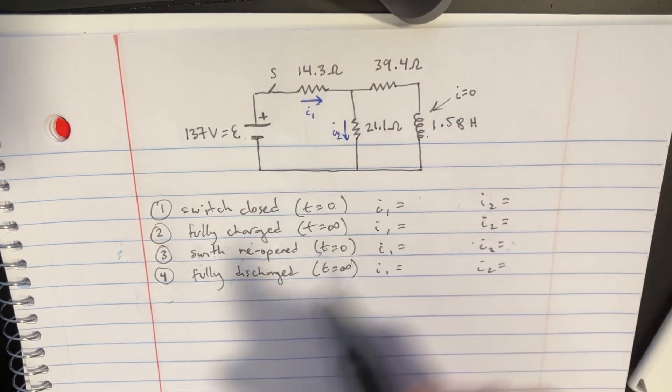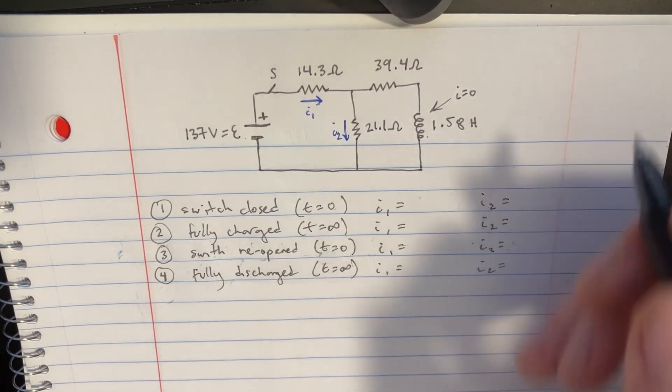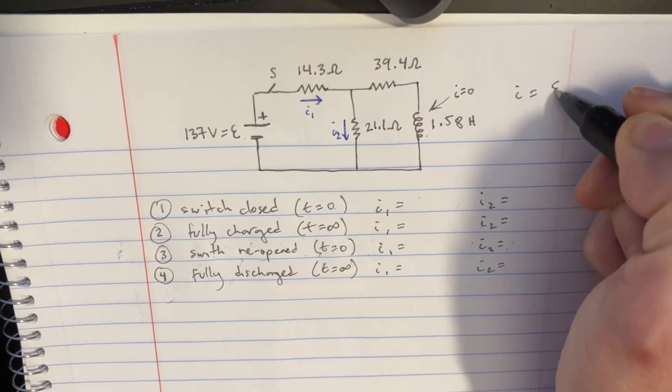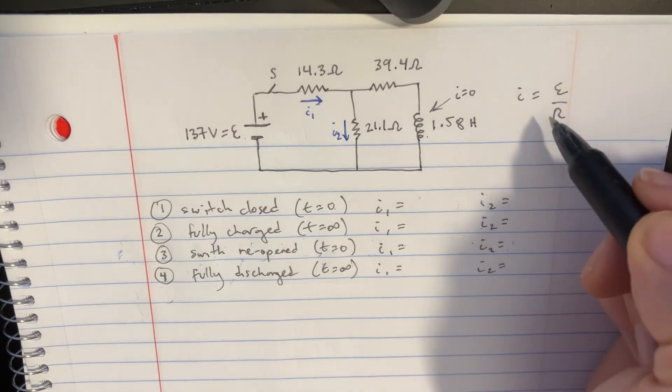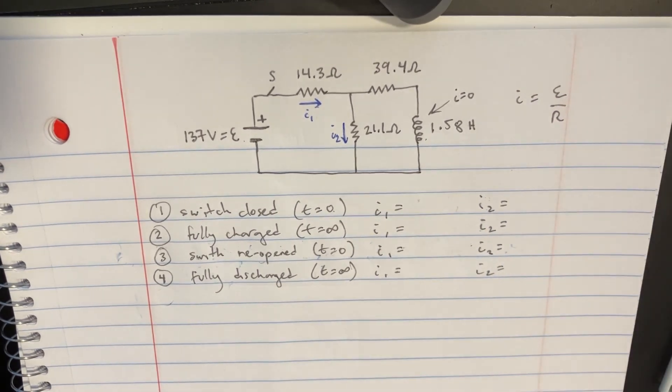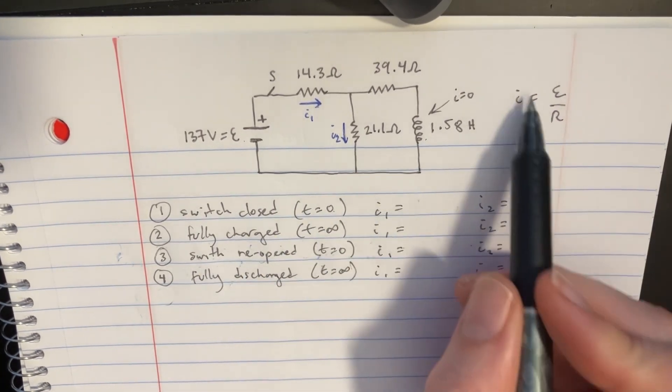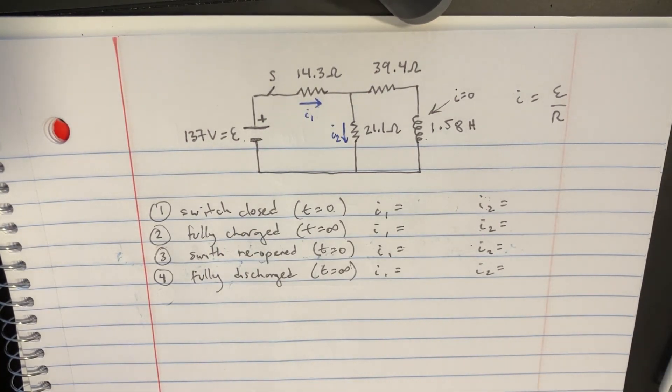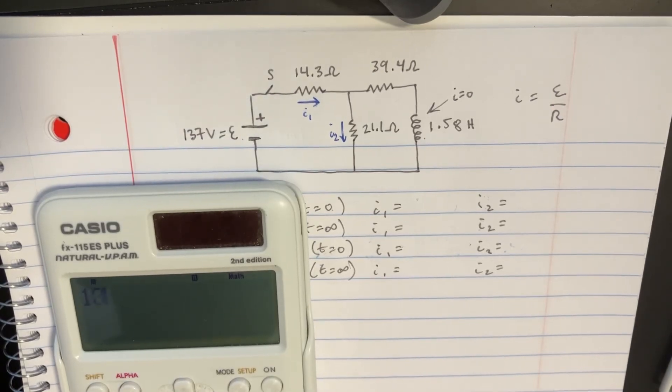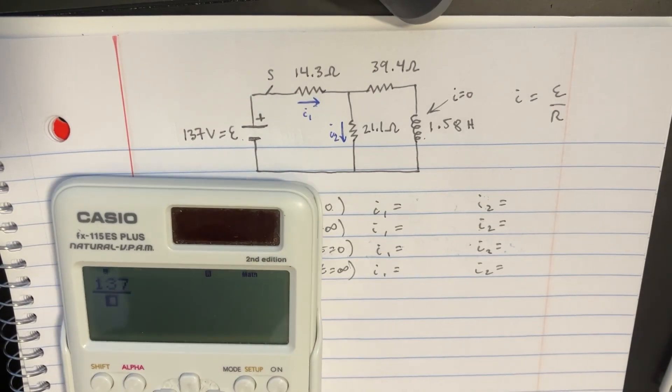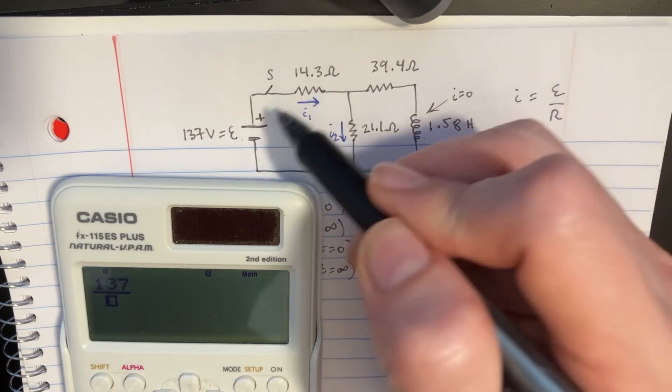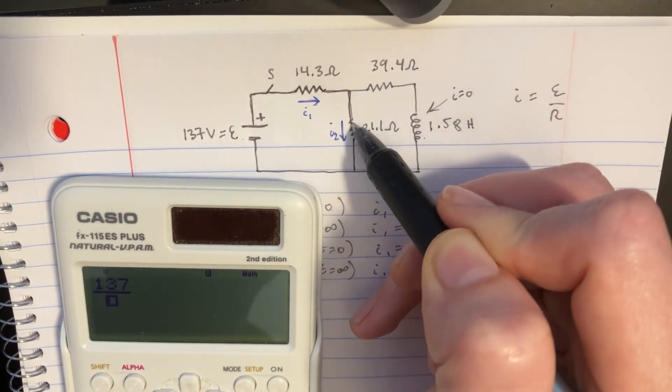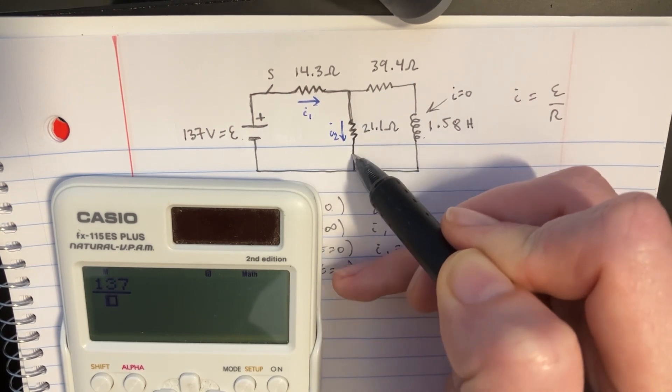So whenever we turn it on, we have this I equals epsilon over R formula. It's Ohm's law. So we use that because immediately after we start this, that's what the current is going to be in I1. We'll use the calculator real quick. We'll just say 137, that's the battery, divided by the resistance. And we're looking at the resistance of this particular circuit right in here.